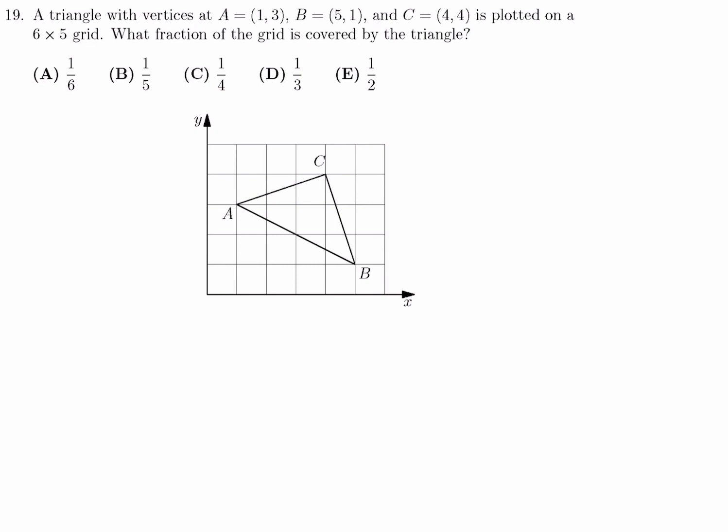A triangle with vertices A, B, and C is plotted on this 6 by 5 grid. What fraction of the grid is covered by the triangle? Well, the total area is obviously 5 by 6, so that total area is 30. Now, to figure out the area of A, C, B, what I can do is I can figure out the area of that triangle and subtract from it these smaller triangles right there.